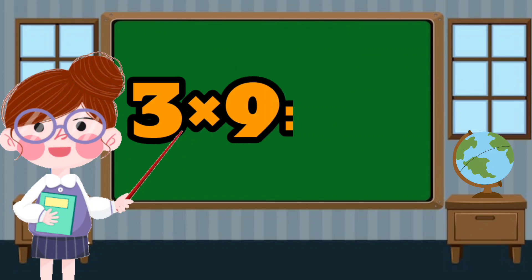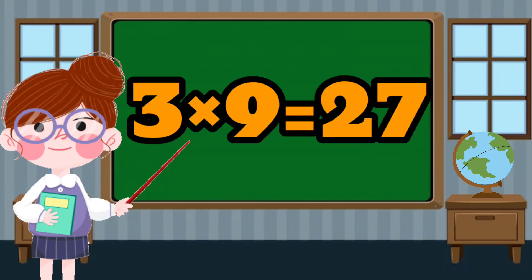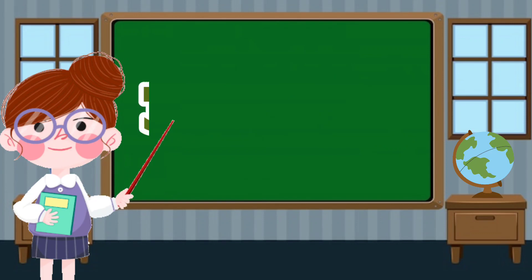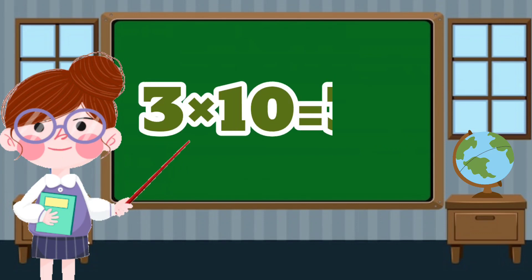3 times 9 equals 27. 3 times 10 equals 30.